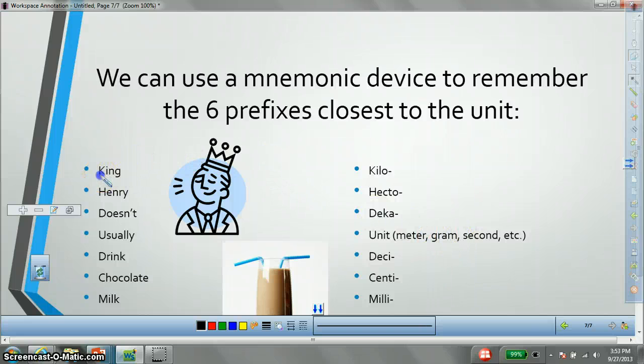K stands for kilo. The H is hecto. The D is deca. And there's our unit. The second D is deci. C is centi. M for milli. Now, we know that each time we go up, we multiply by ten again. Ten, hundred, thousand. And each time we go down, we are dividing by ten. Tenth, hundredth, thousandth.